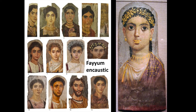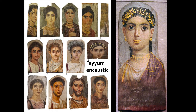With encaustic, what you're doing is suspending your pigment in melted beeswax. Sometimes that beeswax is mixed with other substances — it can be mixed with oil to form something that dries and hardens more slowly and can be worked for a longer period, or it can be mixed with types of varnish and other things. With tempera, on the other hand, you are mixing your paint with some sort of a binder like egg yolk, egg white, or whole egg, and painting with it that way.